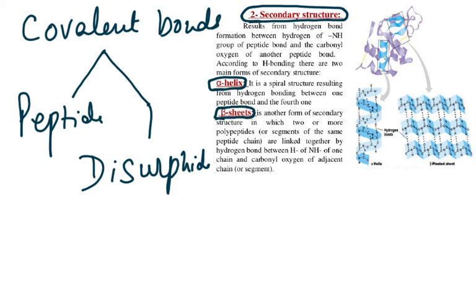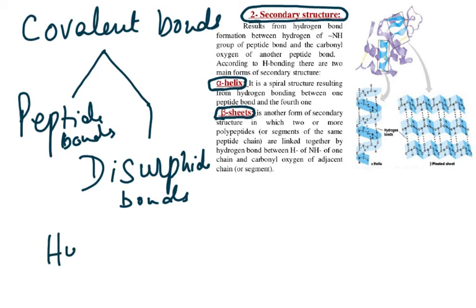There are two covalent bonds to know: peptide bonds, which hold amino acids together, and disulfide bonds, present in the tertiary structure. Both are strong covalent bonds, whereas hydrogen bonds are weak bonds.